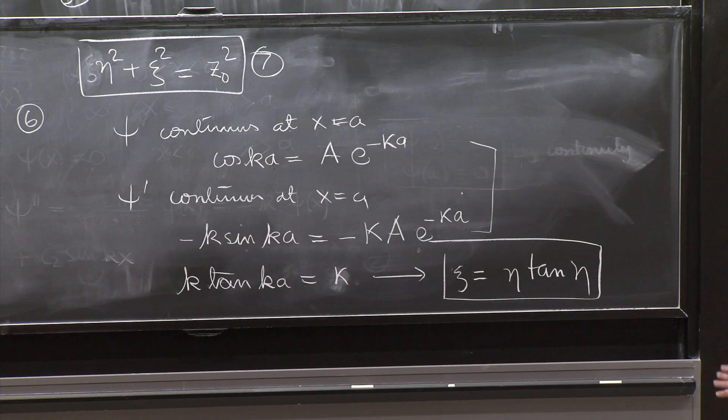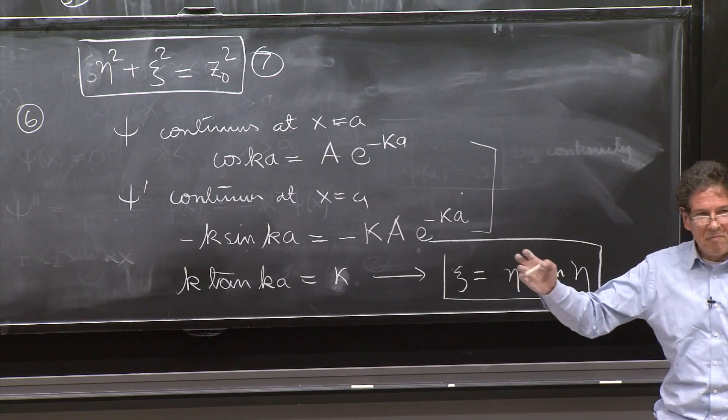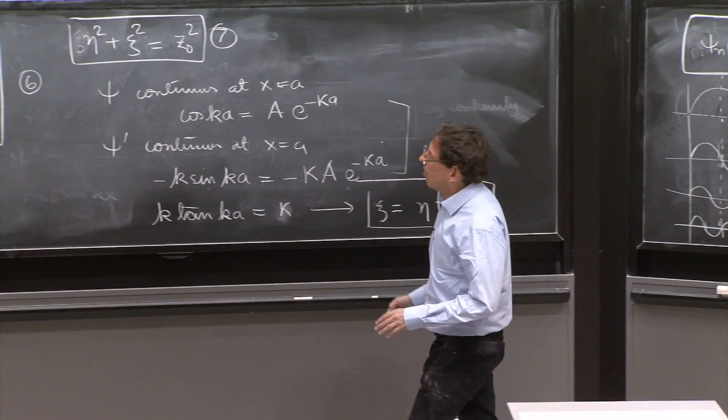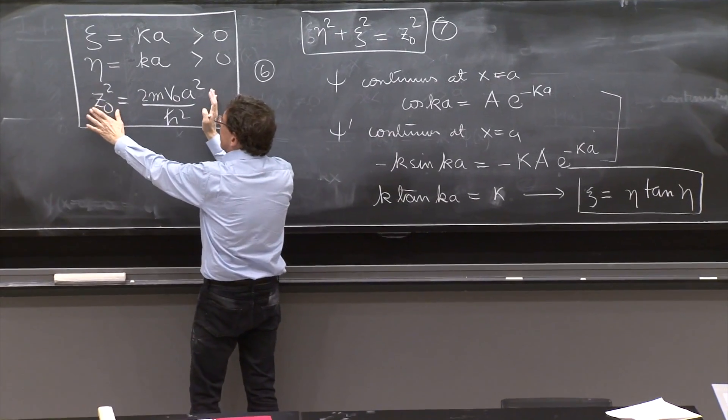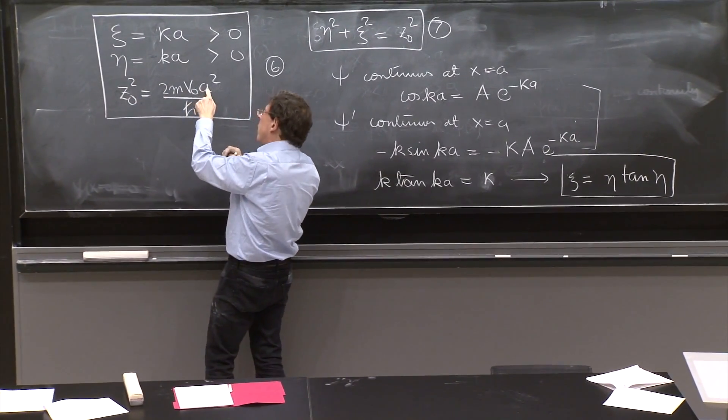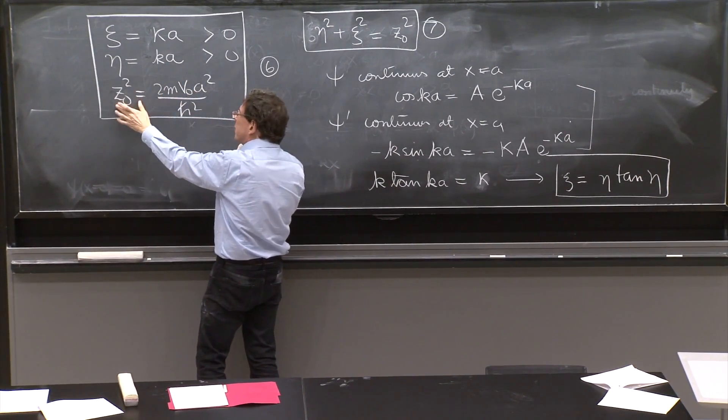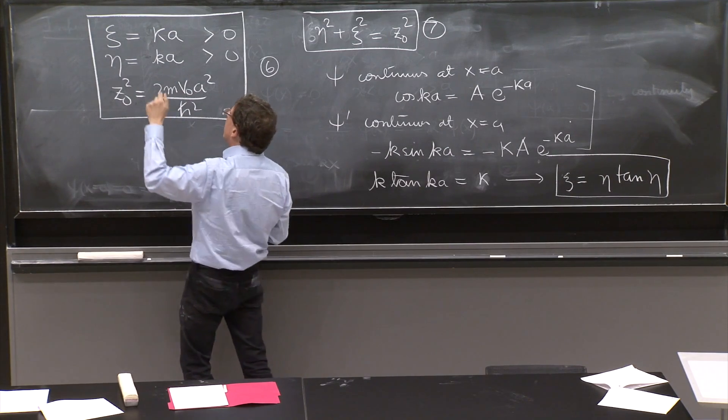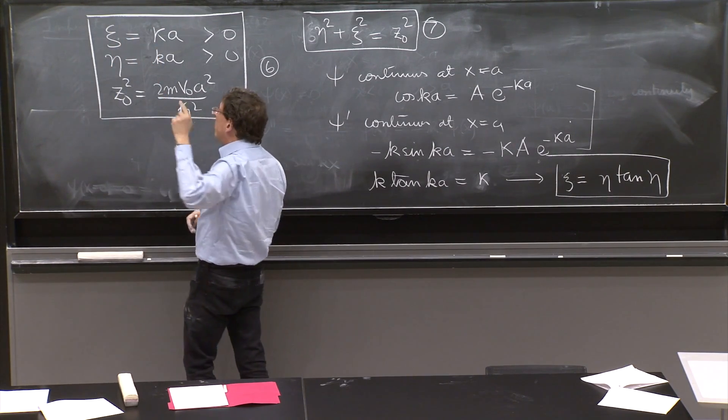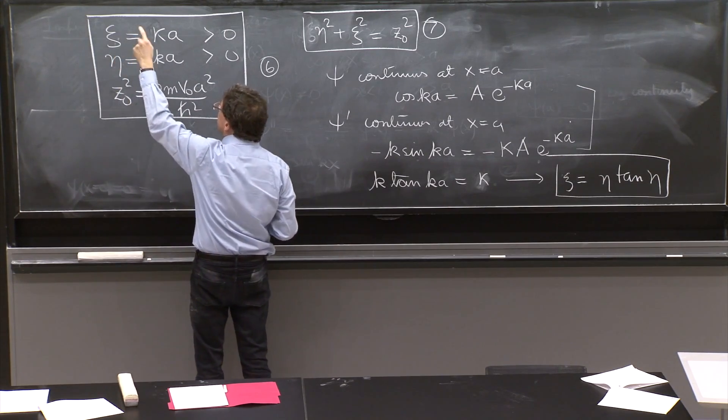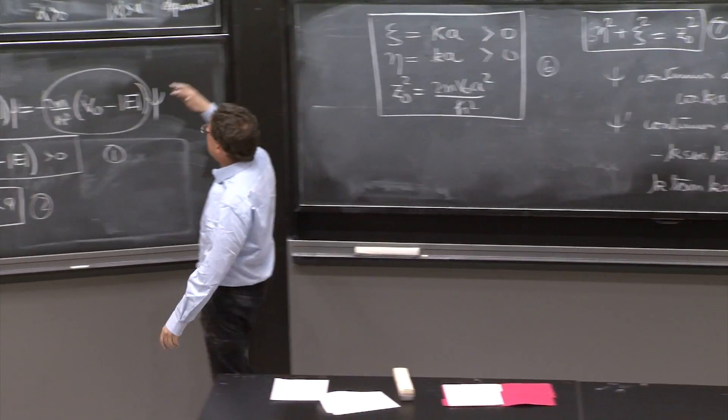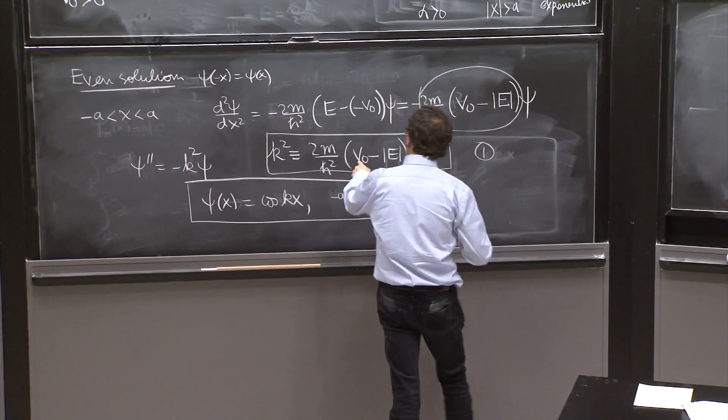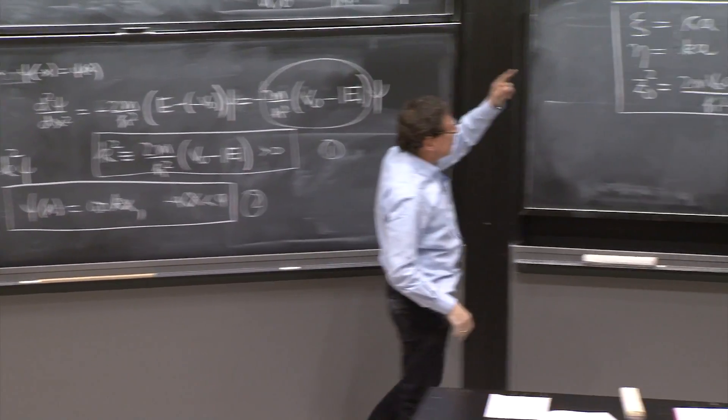OK, I want to make a little comment about these quantities already. So all the problem has turned out into the following. You were given a potential that determines a number z0. If you know the width and everything, you know z0. Now you have to calculate eta and psi. If you know either eta or psi, you know kappa or k. And if you know either k or kappa, since you know v0, you will know the energy.